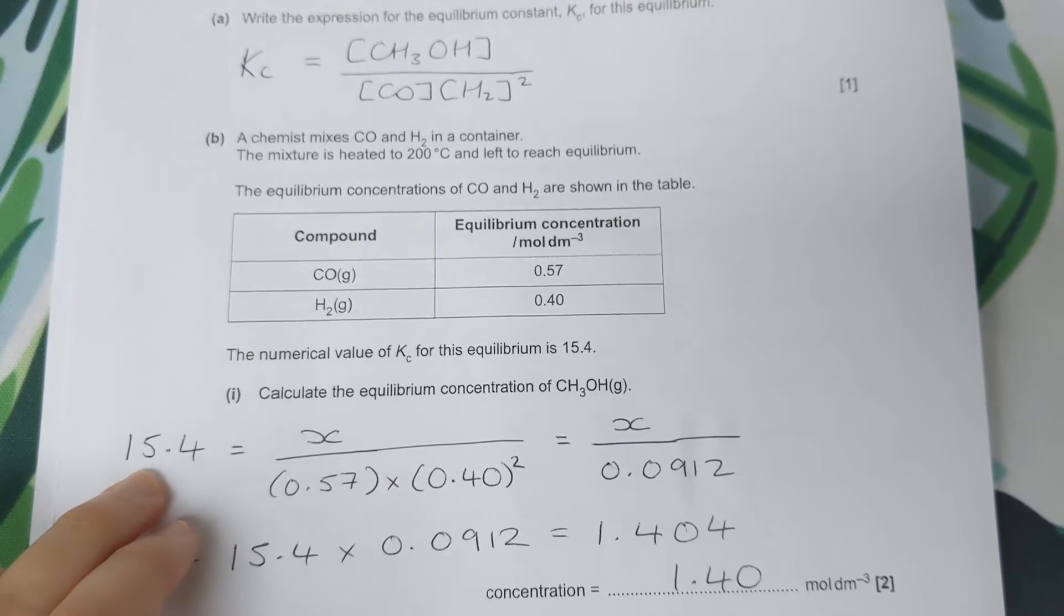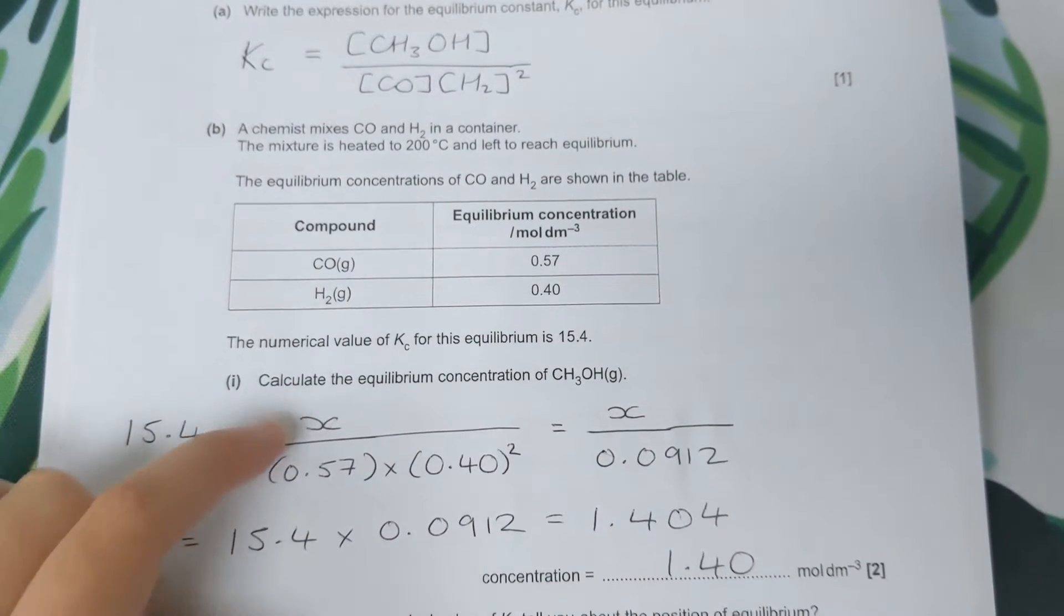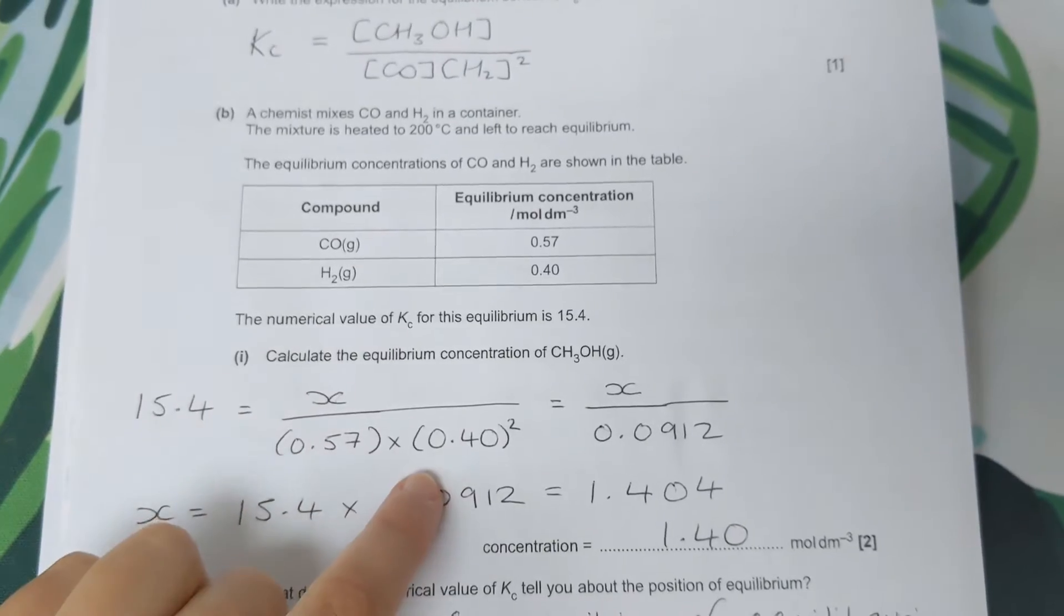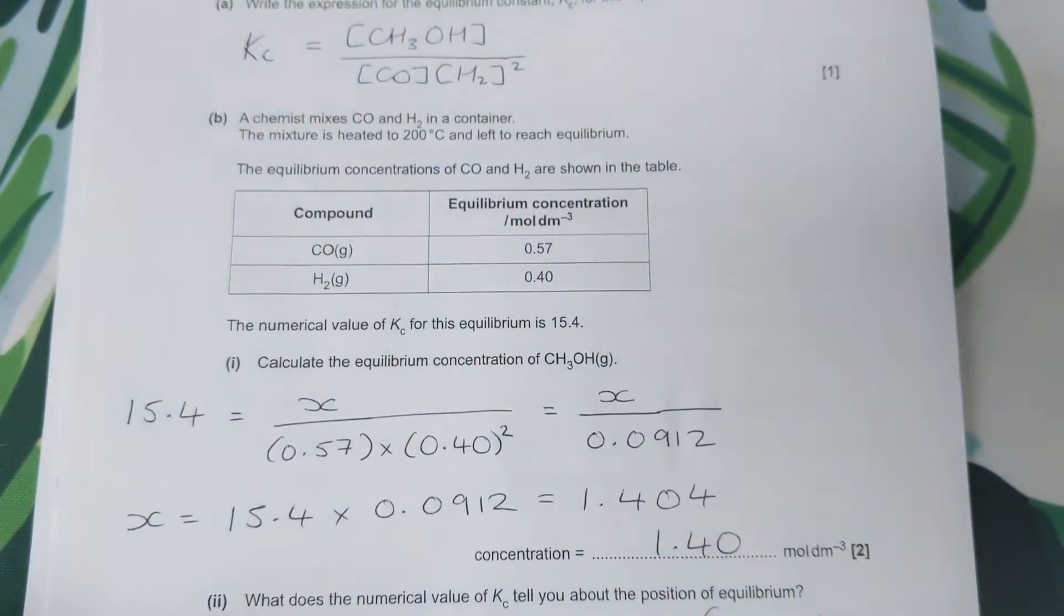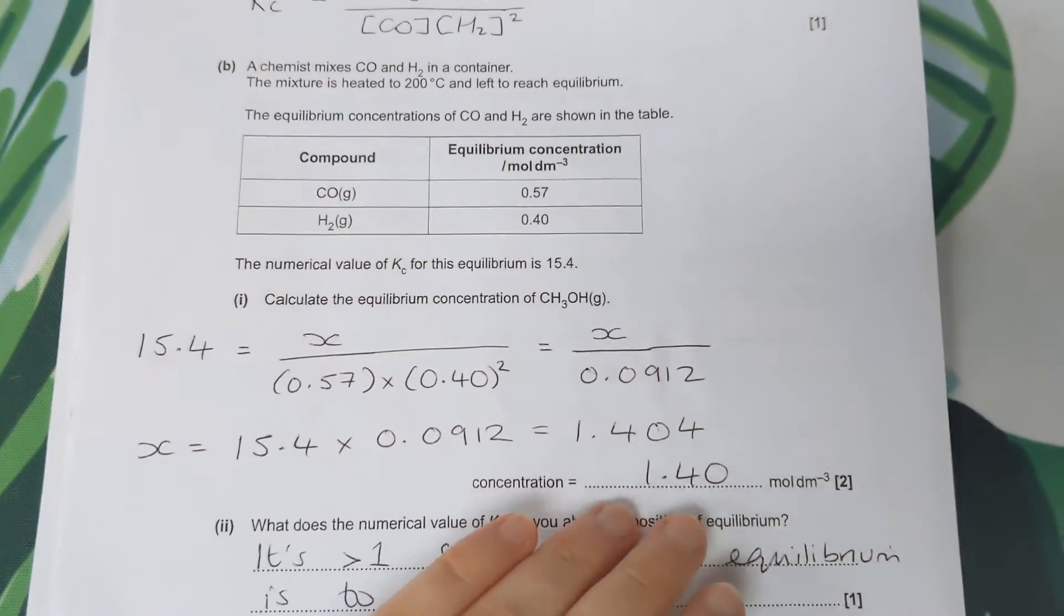Plug in the values - here's the number for KC. Concentration of methanol is what we want to find. We plug in the concentrations for our two reactants and should come out with 1.4.